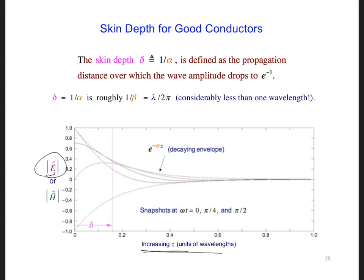These are three different snapshots in time. Omega t is equal to 0, π over 4, and π over 2. So over time, this would be oscillating up and down between the two dotted lines.